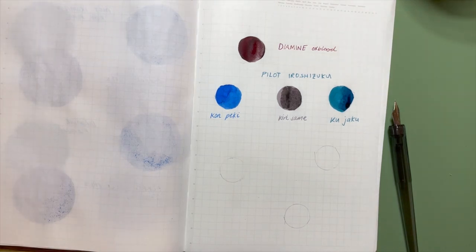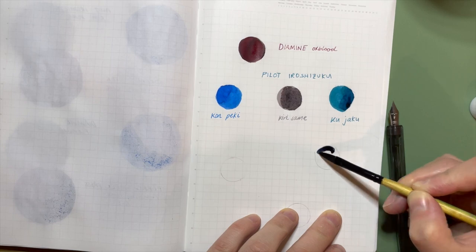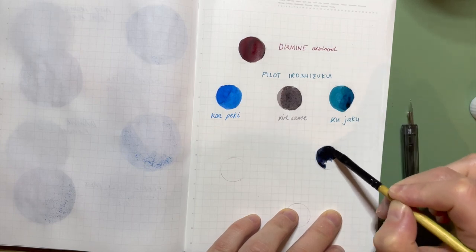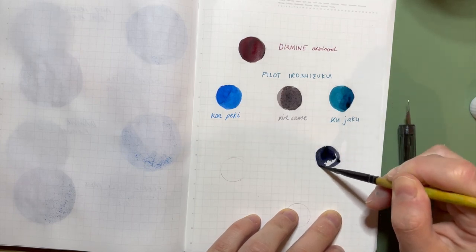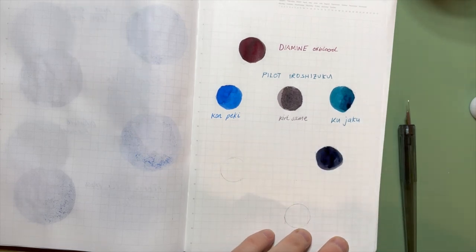Third recommendation is a category of inks that I'm going to call almost blacks, and there are so many. Today I'm going to swatch Robert Oster Thunderstorm, which is like a bluey gray. But the reason I'm saying almost blacks is for someone like me, I felt a bit overwhelmed with all the colors, and going with an almost black ink was a way to kind of dip my toe in.